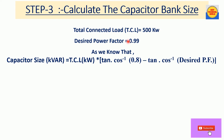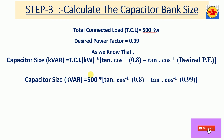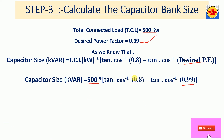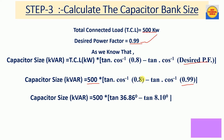Now putting the values into the formula: total connected load is 500 kW, multiplied by tan(cos⁻¹ 0.8), which is the reference power factor, minus tan(cos⁻¹ 0.99), which is our desired power factor value.